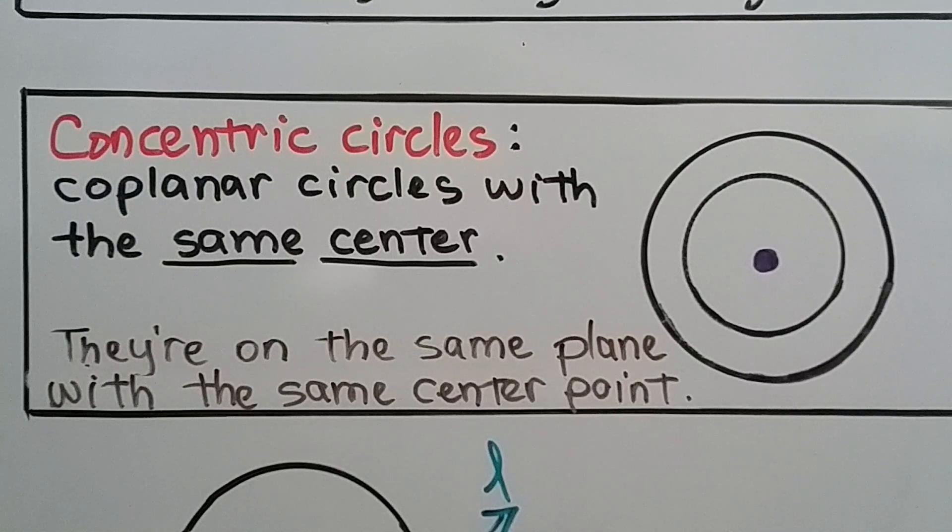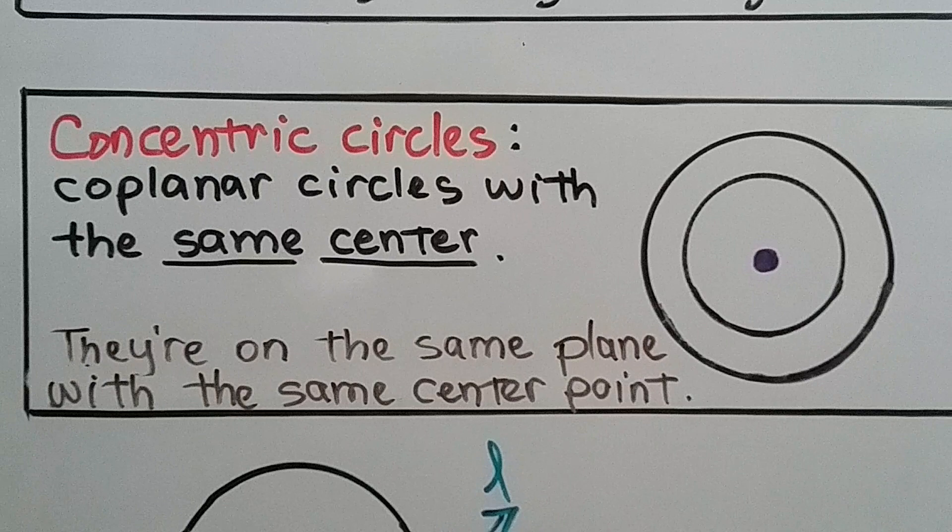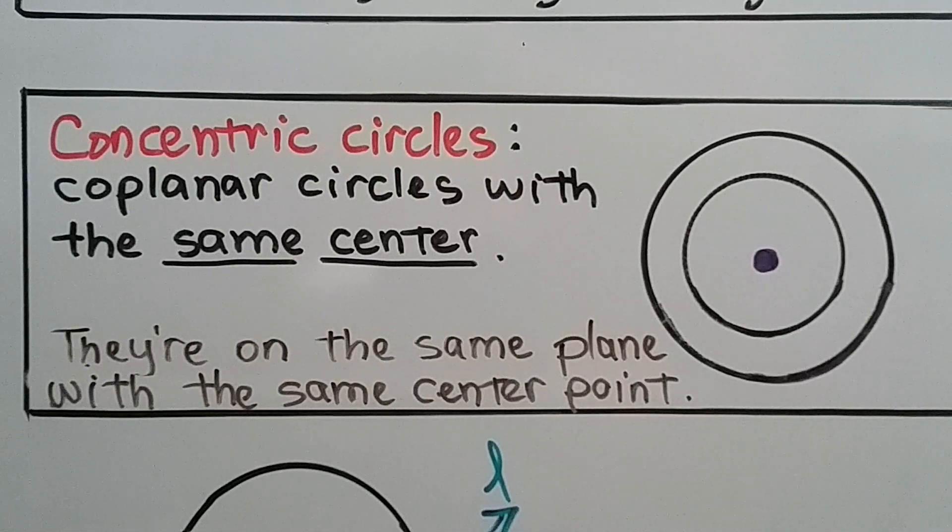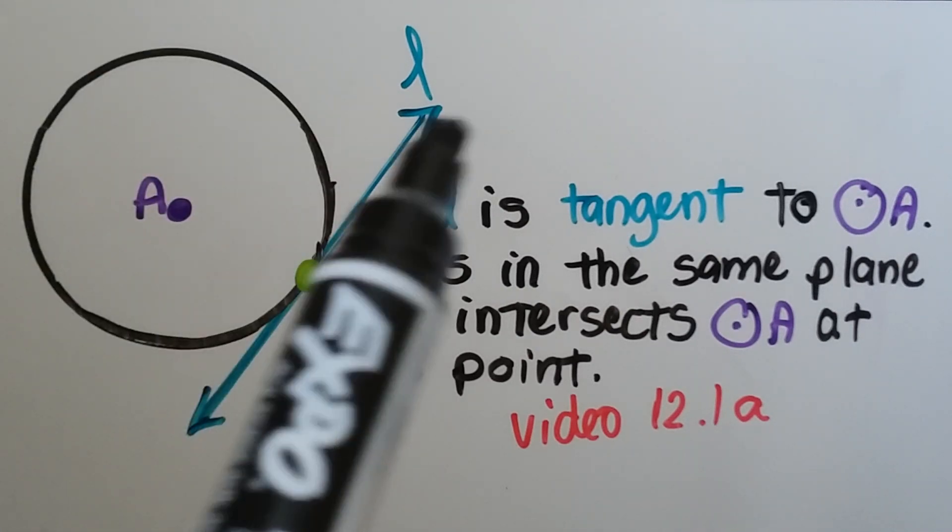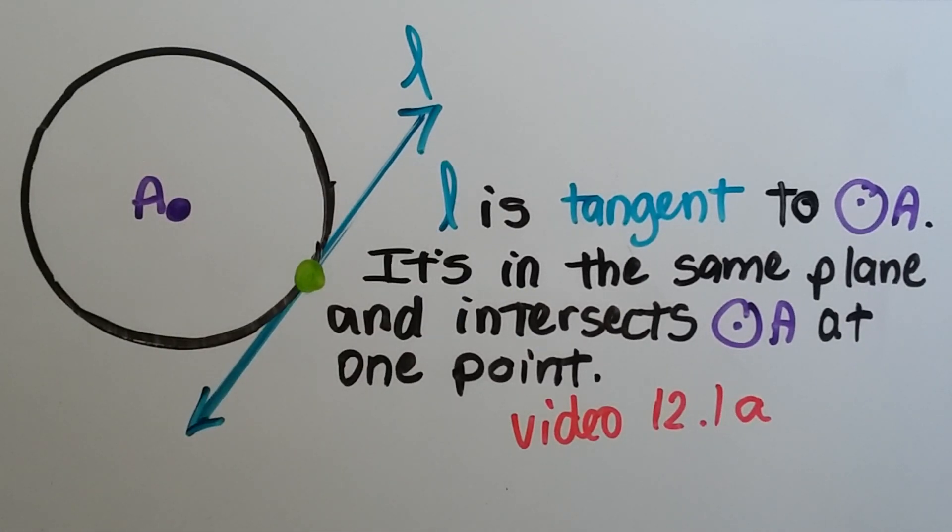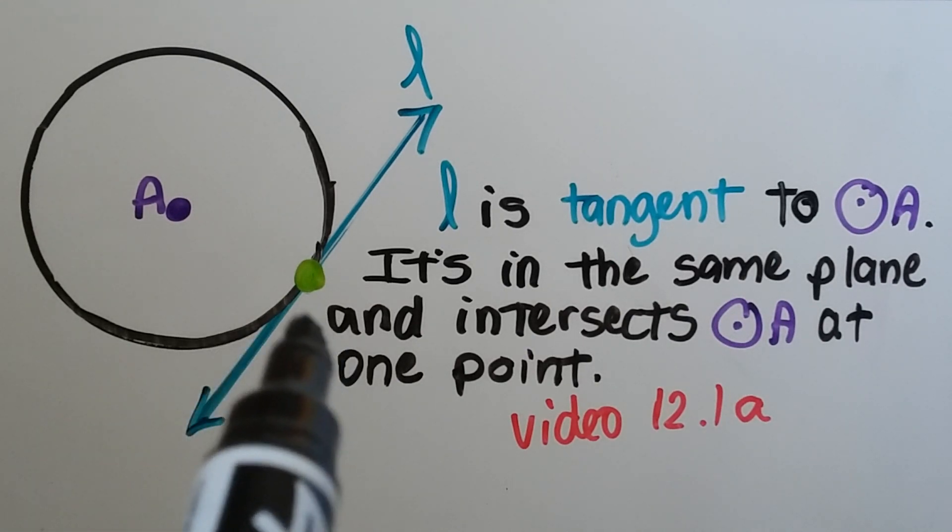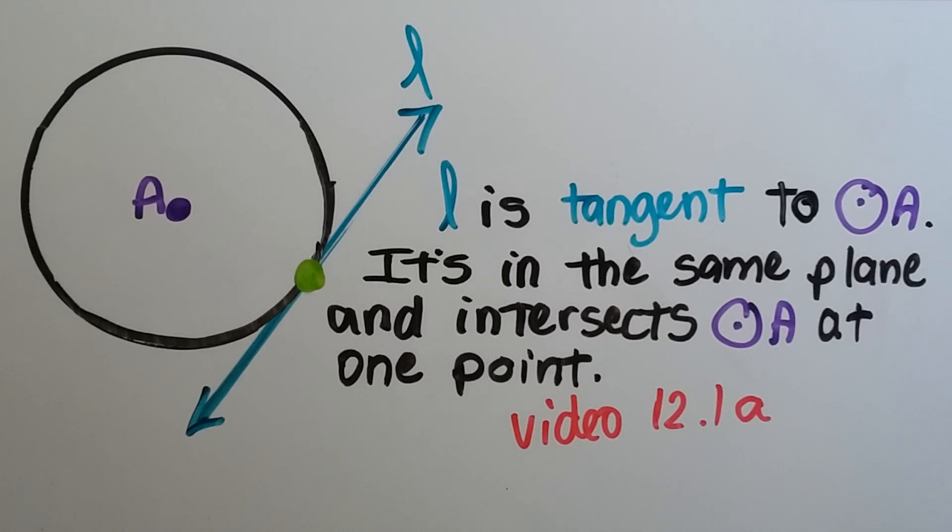Concentric circles are coplanar circles with the same center. They're on the same plane with the same center point. And we discussed in the last video, 12.1A, that this line L is tangent to circle A. It's in the same plane and intersects circle A at one point right here. That's the point of tangency. That green dot.